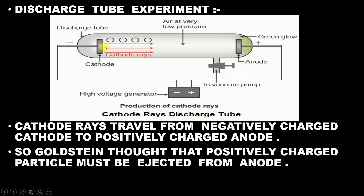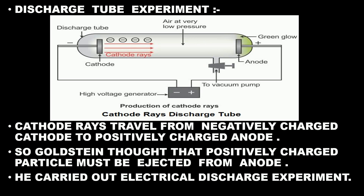Now, what Goldstein thought was: if this negatively charged cathode can emit certain negative particles, why can't the positively charged anode emit positive particles? So for this, he carried out an electrical discharge experiment.